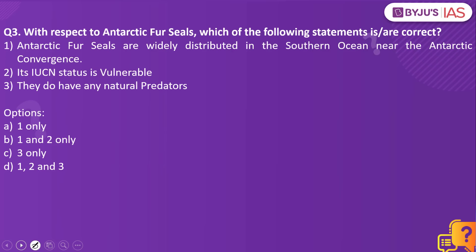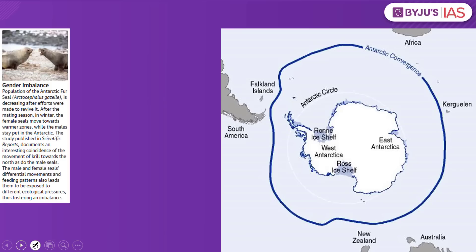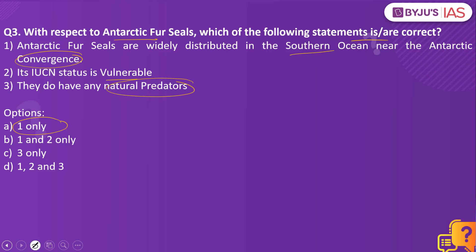Next question: With respect to Antarctic fur seals, which statements are correct? Statement one: Antarctic fur seals are widely distributed in the southern ocean near the Antarctic convergence. Statement two: their IUCN status is vulnerable. Statement three: they do not have any natural predators. The answer is statement one only. We took this question because the article makes a mention of the Antarctic fur seal.